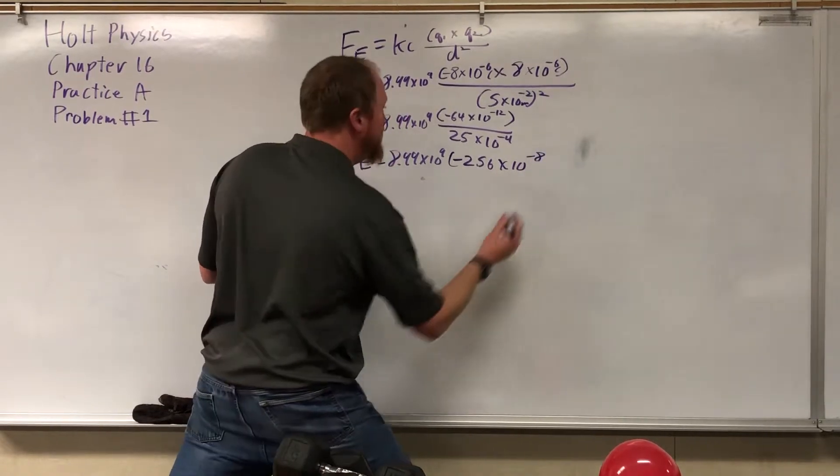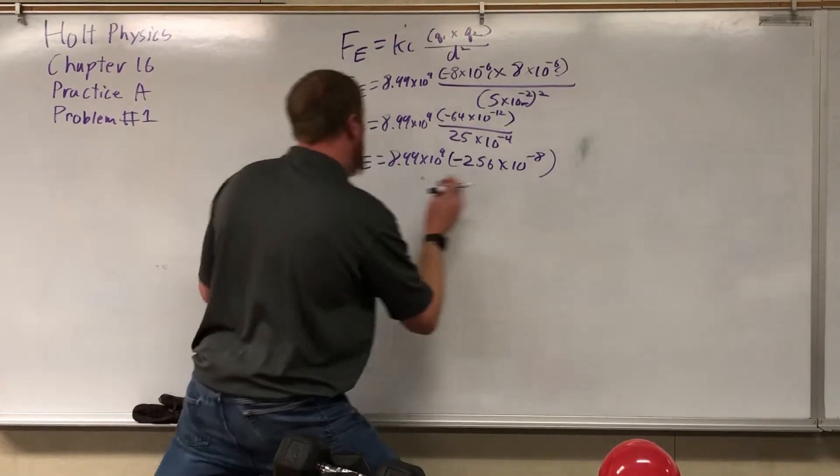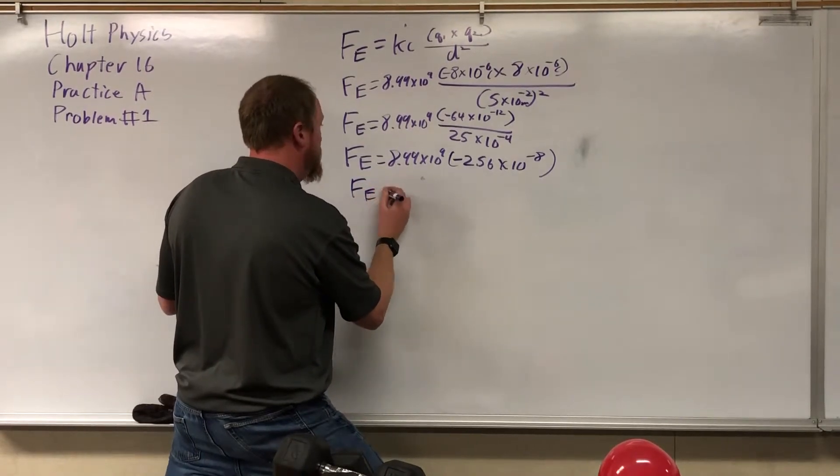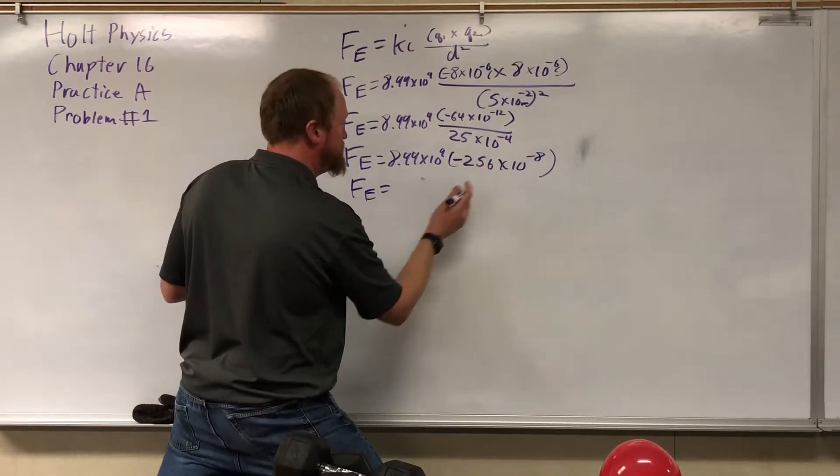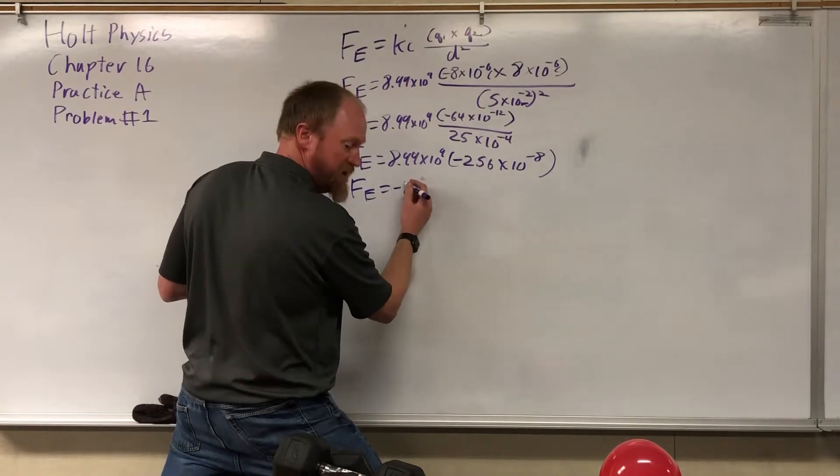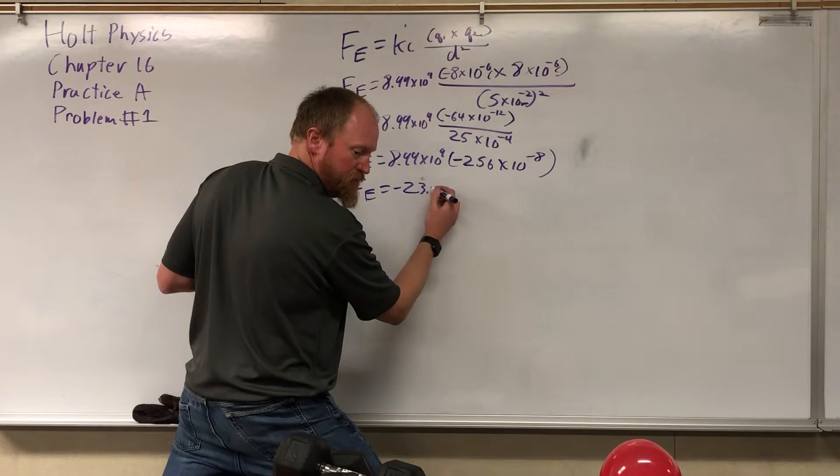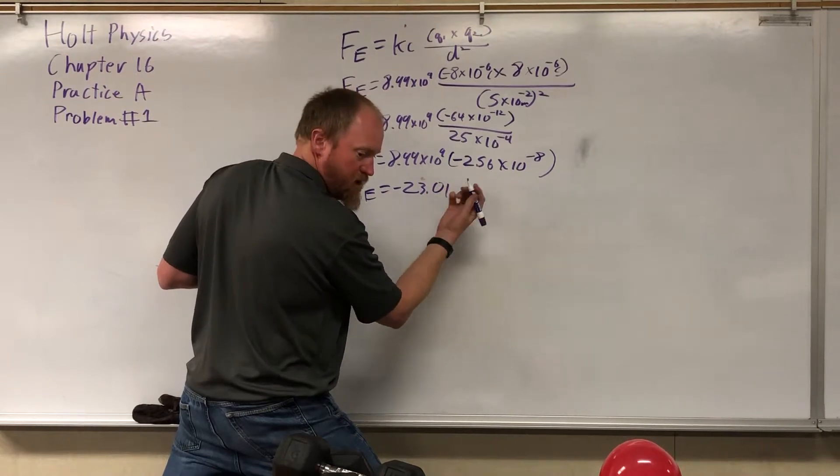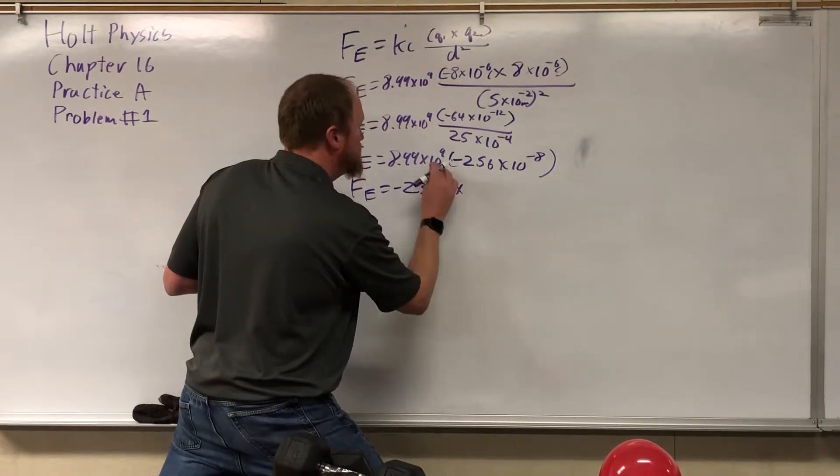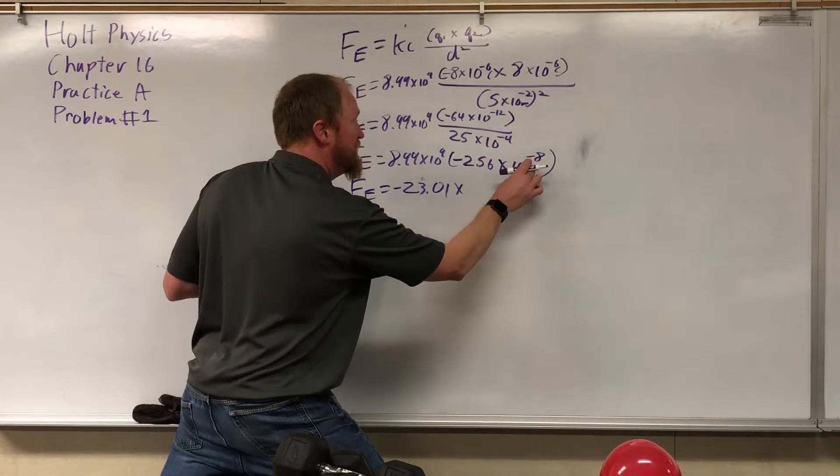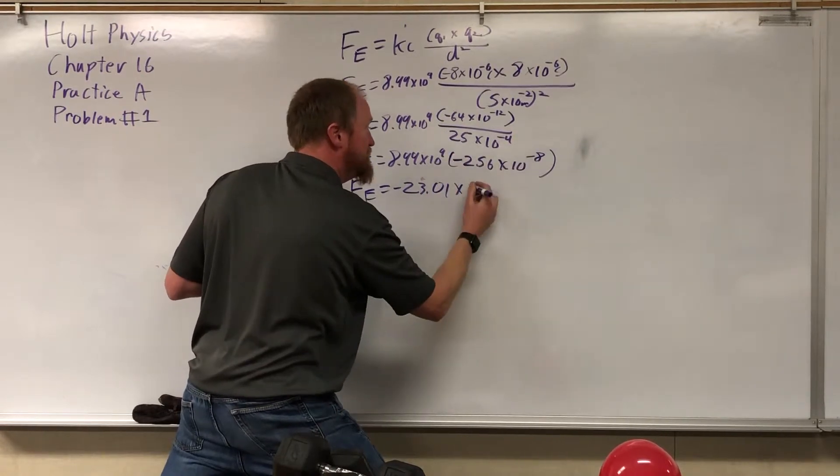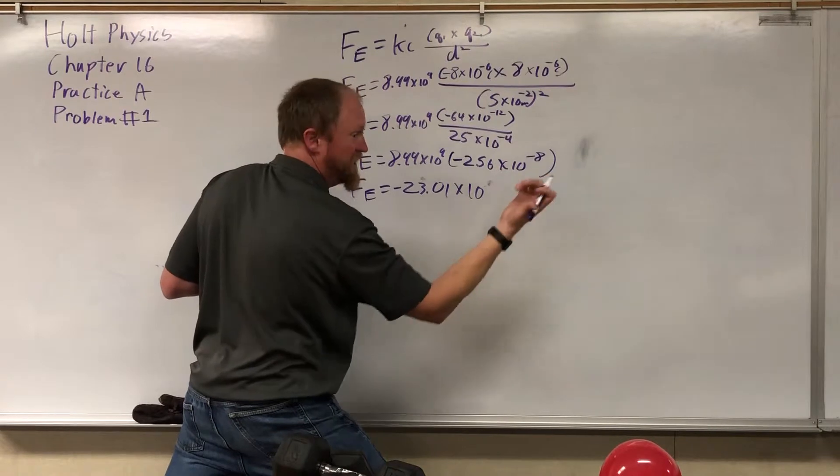Am I doing this right? Okay. Yes, I am. All right. Now continuing forward. 8.99 times negative 2.56 is negative 23.01. 10 to the ninth times 10 to the negative eight. Nine minus eight is just plain 10. 10 to the first, which is 10.